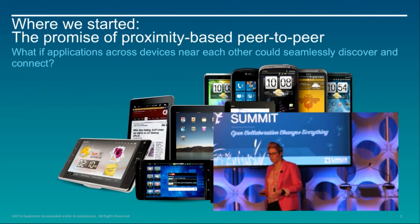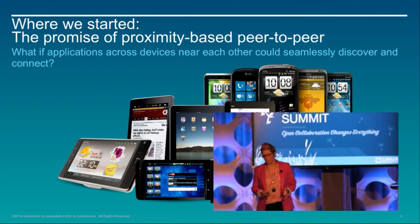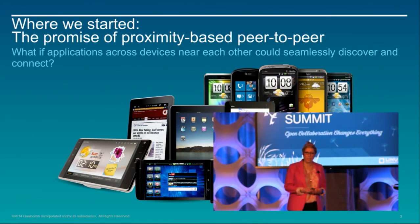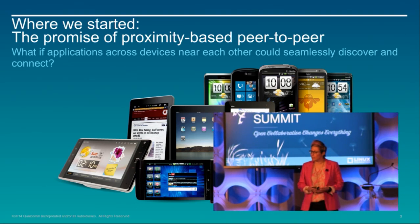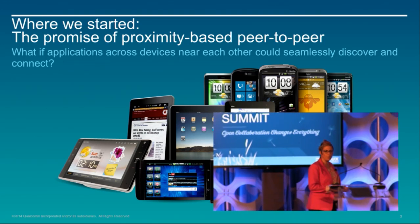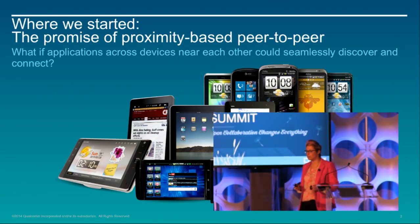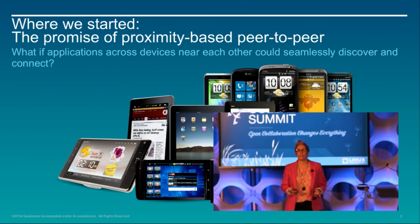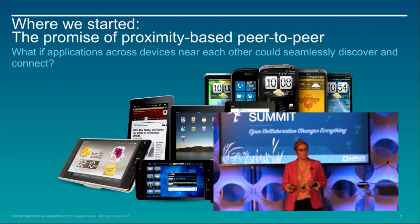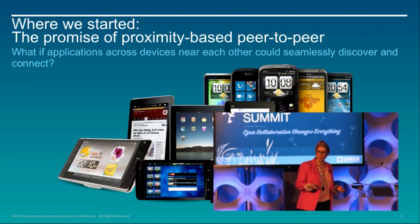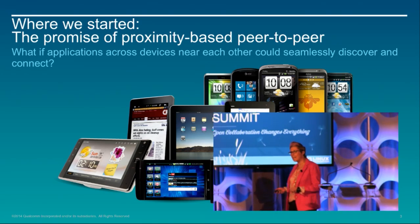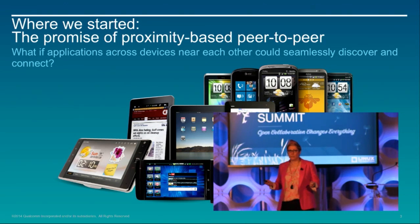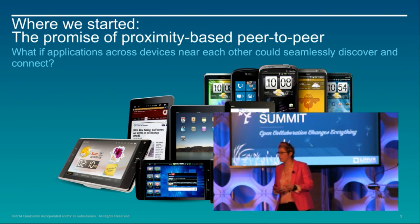What was the problem that we tried to solve? We were actually working with the mobile app developer community, and we started to notice that it was weird that almost 100% of the phones and tablets out there have Wi-Fi and Bluetooth — proximal radio connections — yet there are almost no apps that allowed you to discover people or devices nearby and just communicate with them. Why is it that when we're in a conference room or boardroom or classroom, the devices can't just all connect up and create a peer-to-peer connection?